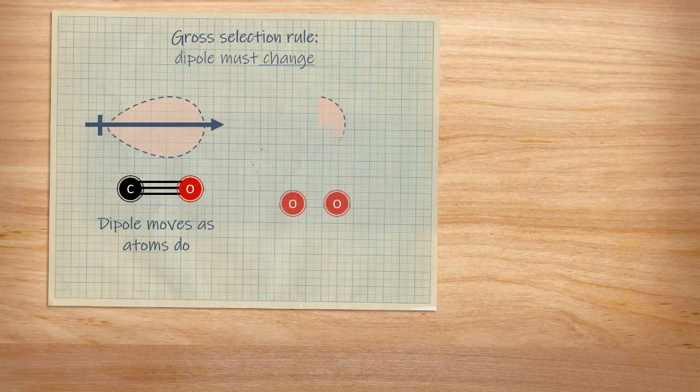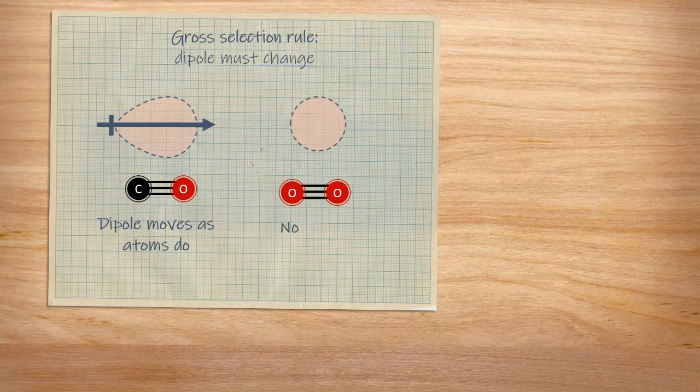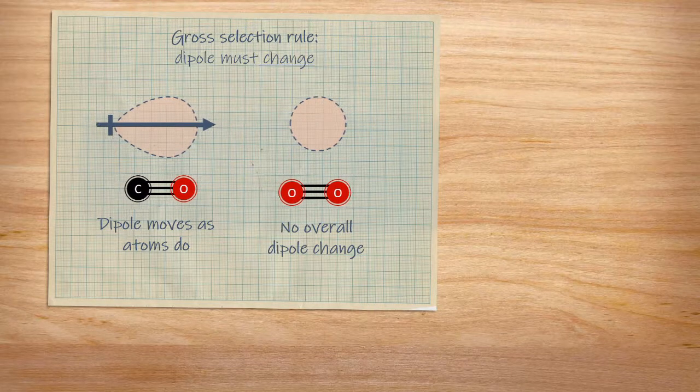With a homonuclear diatomic molecule, there's no overall dipole when we distort the molecule. The requirement for a dipole to change during the vibration means that molecules that normally don't have a dipole can still have a vibration visible in the infrared if the change happens to create one.